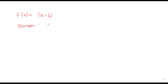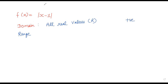So the domain includes all real values. If we talk about the range, the modulus function always gives a positive value, so negative output is not possible. We write positive values and zero. For example, if x = 1, then f(1) = |1 - 1| = 0.